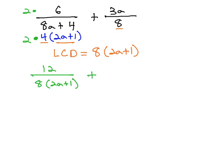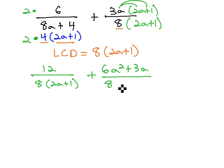Plus, the second fraction in the denominator is missing the 2a plus 1. So, we'll multiply by 2a plus 1 in both the numerator and denominator. Distributing gives us 6a squared, plus 3a over the common denominator of 8, times 2a plus 1.